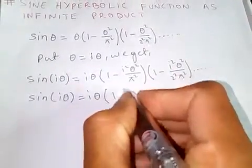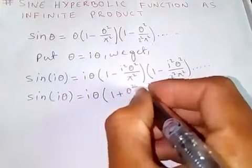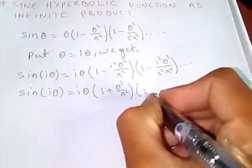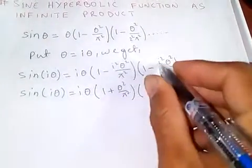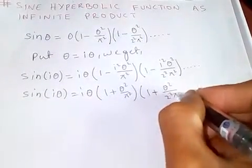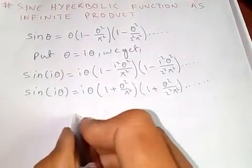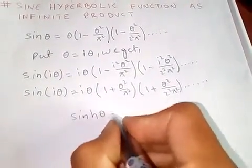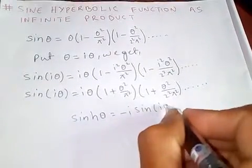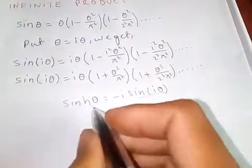Now, since i squared equals minus 1, the terms become plus. So sine(i·theta) equals i·theta times (1 plus theta squared over pi squared) times (1 plus theta squared over 2 squared pi squared) and so on. We know that sinh(theta) equals minus i times sine(i·theta).